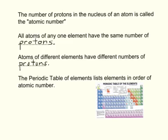And this idea of atomic number is absolutely fundamental to chemistry. The periodic table of elements lists elements in order of atomic number. In other words, in order of the number of protons in the nucleus of every atom.